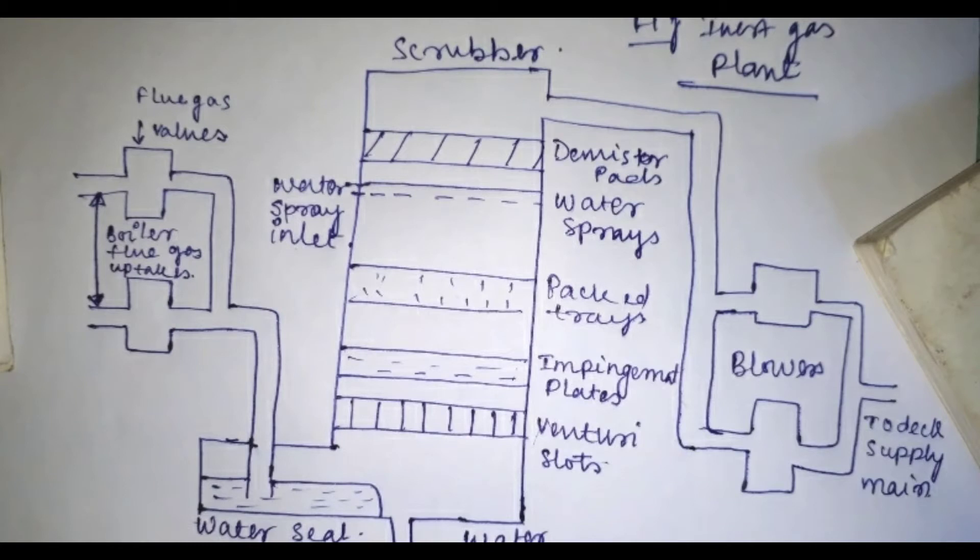Demister trays, which consist of polypropylene mattresses, are located at the top of the tower to remove water droplets from the gas. The sea water which cleans the gas becomes acidic and is led overboard from the bottom of the scrubber by corrosion-resistant piping. Last is a blower. These are electric motor-driven centrifugal blowers which deliver the clean cool inert gas to the cargo tanks via the distribution system.